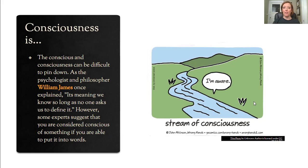We're going to discuss a couple of different theorists who have opinions and ideas about consciousness. The first one is William James. You may recall from our first couple of videos, William James was our first American psychologist — very much a functionalist who wrote the first psychology textbook. He explained that consciousness is something we know so long as no one asks us to define it. Some experts suggest that you aren't even considered conscious of something if you aren't able to put it into words. So, are we conscious of consciousness?